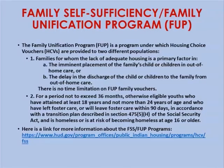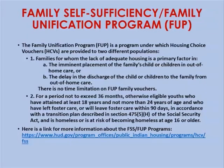The Family Self-Sufficiency Family Unification Program provides housing choice vouchers to two populations: families for whom lack of adequate housing is a primary factor in having a child placed out of the home or delayed discharge from out-of-home care, such as foster care; and, for up to 36 months, eligible youth who have attained at least 18 years and not more than 24 years of age, who have left or will leave foster care within 90 days and will be homeless or at risk of homelessness. For more information, visit the link provided.